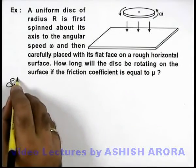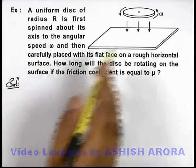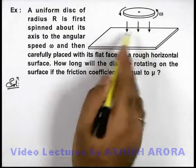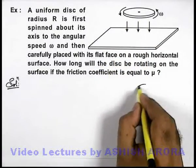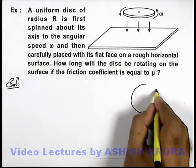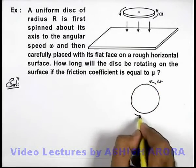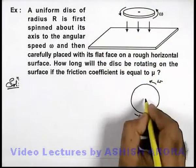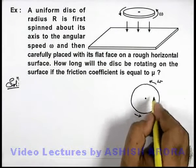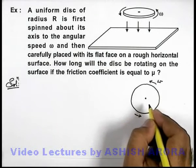In this situation, if we analyze the case, we can state due to friction it will experience an opposing torque. If we draw the top view of the disc which is rotating at angular speed omega, I am just drawing the top view of this disc.